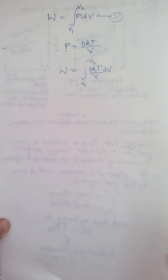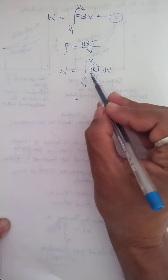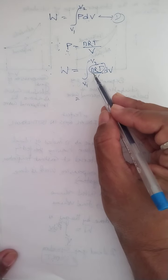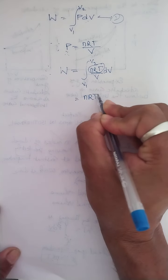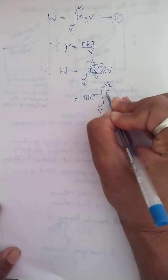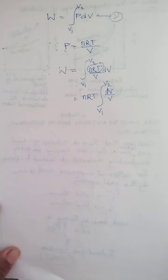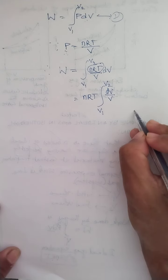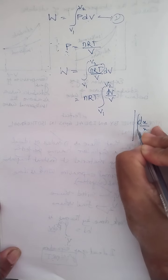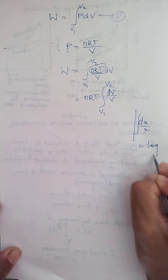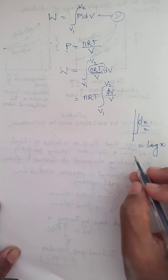To derive this expression, we follow calculus — integration. In this integration, nRT are all constant: n is the number of moles (constant), R is also constant, and temperature is constant under the isothermal process. So I take nRT outside the integration: W = nRT × integration from V1 to V2 of dV / V.